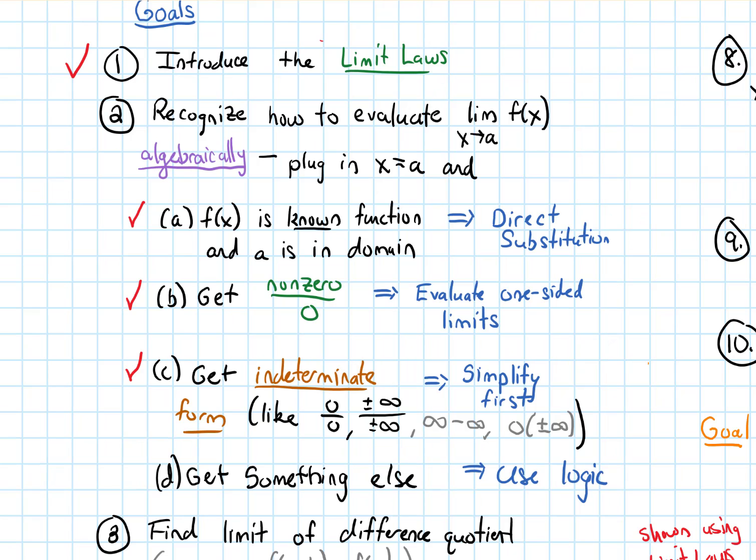So in terms of our goals, we finished case 4 for evaluating limits algebraically, which is what if none of the above happens? Then we got to use logic. And in that previous example, it involved recognizing the shape of the ln graph.